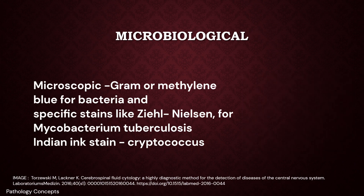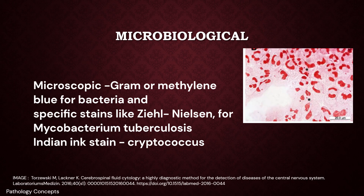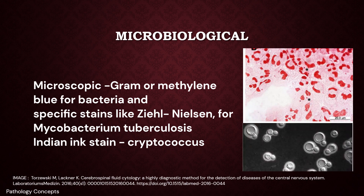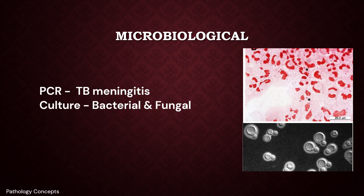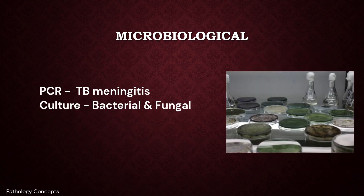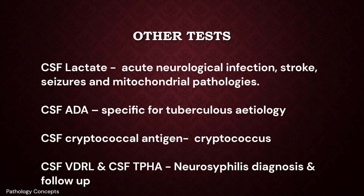Microbiological examination includes Gram stain or methylene blue for bacteria, and specific stains such as auramine O or Ziehl-Neelsen for Mycobacterium tuberculosis. In immunosuppressed patients, India ink stain is used for Cryptococcus species. PCR testing can be useful for TB meningitis. Bacterial and fungal cultures are indicated based on clinical presentation, and anaerobic cultures are performed only when brain abscess is suspected.